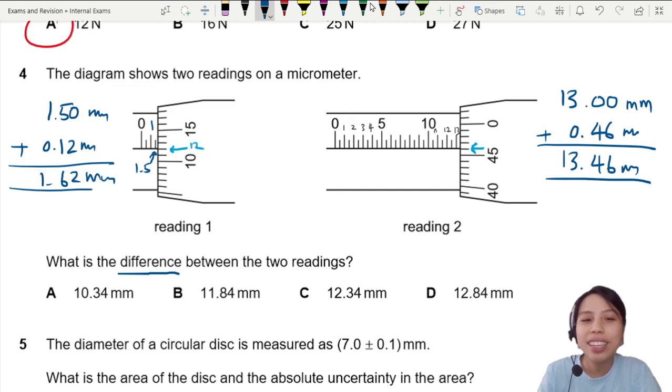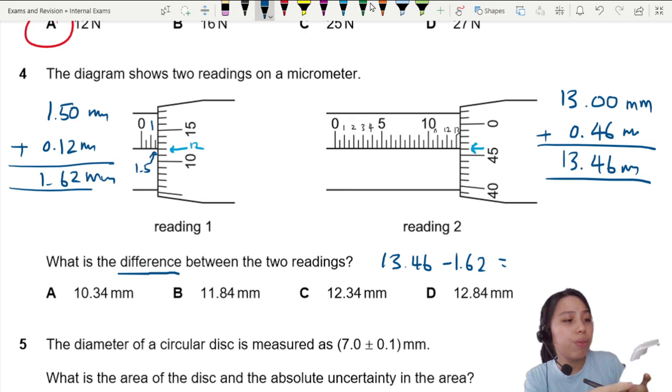So to find the difference in the end, we have to take 13.46 minus 1.62, giving me a value of 11.84.